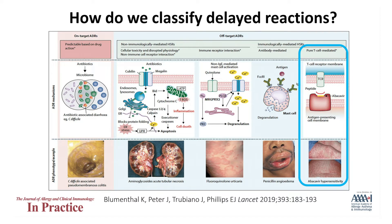To understand how we approach delayed hypersensitivity reactions in the clinic, it is helpful to understand how we classify them. Delayed reactions are characterized by different reactions of varying severity that come on over several hours — generally greater than six hours — to weeks following initiation of a new drug. The reactions are often mediated by specific types of T-cells called CD4 or CD8.